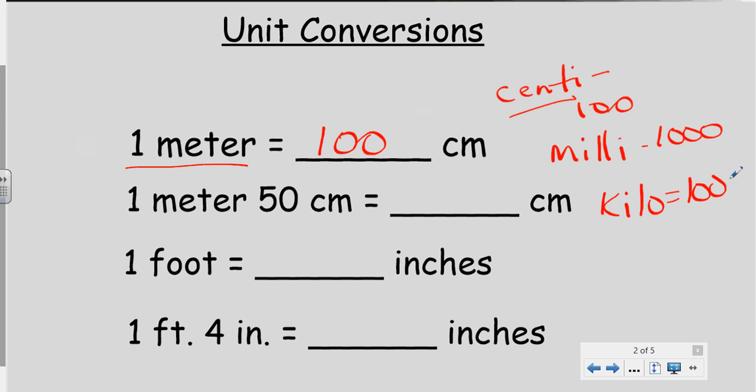Just like milli means 1000 and kilo means 1000. It's all based on that meter. One meter 50 centimeters - well, one meter equals 100 centimeters, so 100 plus 50 equals 150 centimeters.